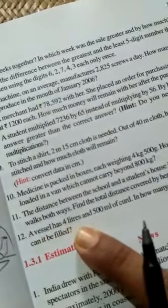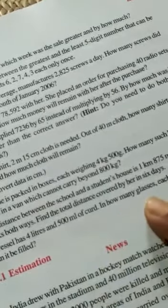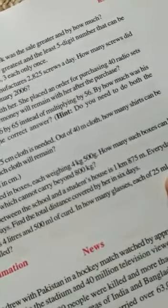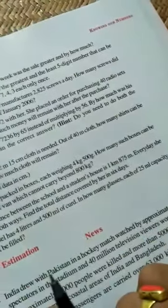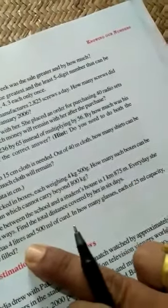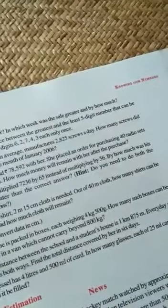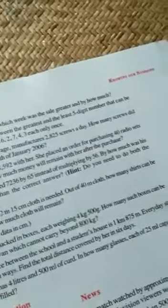Now question number 12. Our vessel has 4 liter and 500 milliliter of curd. In how many glasses each 25 milliliter capacity can each be filled? Means capacity of glass 25 milliliter and the quantity of curd this much. So again divide by 25. First time this much liter 500 milliliter convert into milliliter. 4500 milliliter. And this much number divide by 25.